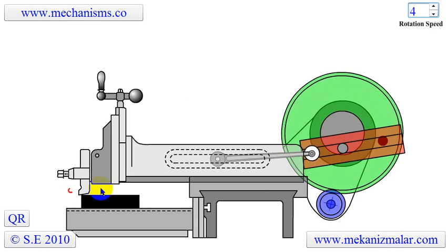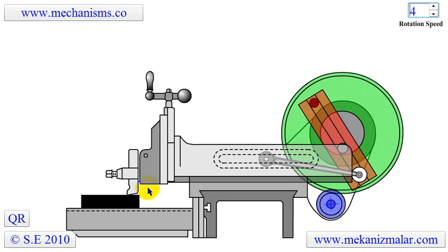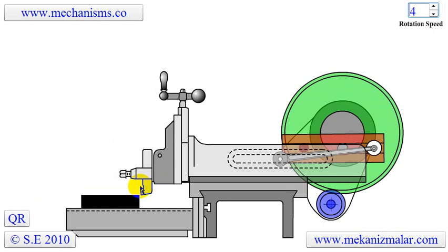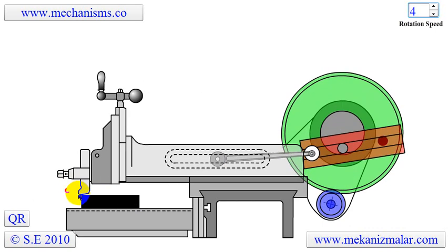Since cutting requires much more force, it is done during the slow forward motion of the ram. To increase efficiency, the return stroke is performed at a much faster rate.